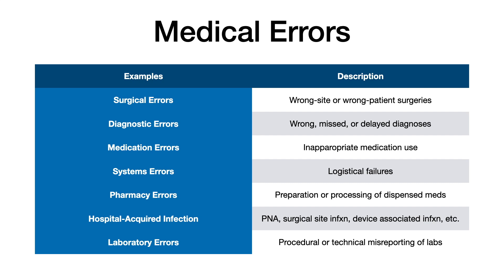Medication errors occur when an inappropriate medication is used. Systems errors refer to logistical failures in a hospital, private practice, or some type of organization where the system through which patients move fails. Pharmacy errors involve preparation or processing of dispensed medications. Hospital acquired infections — including hospital acquired pneumonia, surgical site infections, and device or catheter associated infections — are technically medical errors.